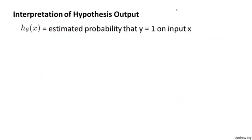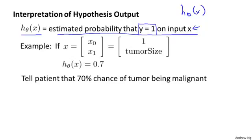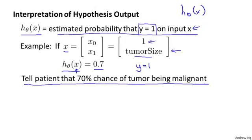Here's how I'm going to interpret the output of my hypothesis h of x. When my hypothesis outputs some number, I'm going to treat that number as the estimated probability that y is equal to 1 on a new input example x. For example, using the tumor classification example, suppose a patient comes in with some tumor size as their feature vector x, and my hypothesis outputs the number 0.7. This means the hypothesis is telling me there is a 70% chance of the tumor being malignant.